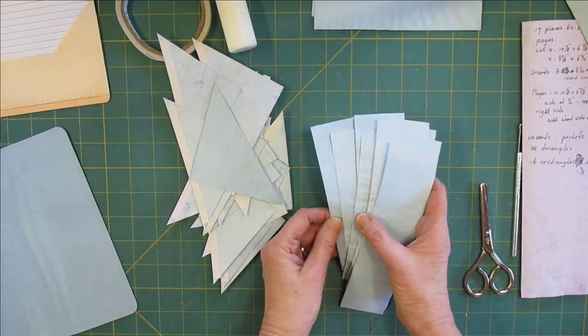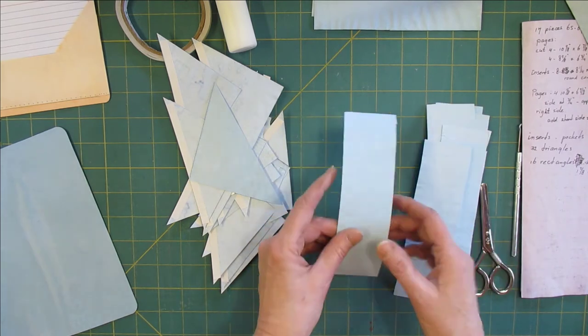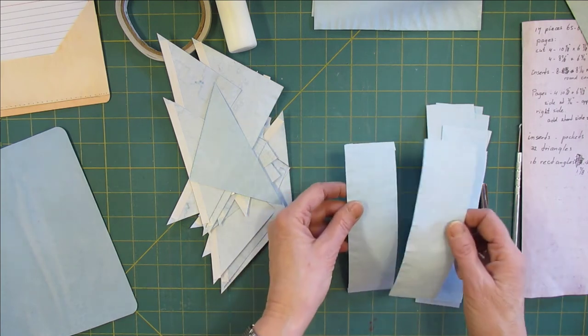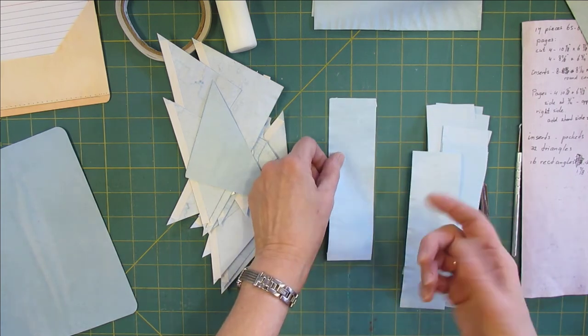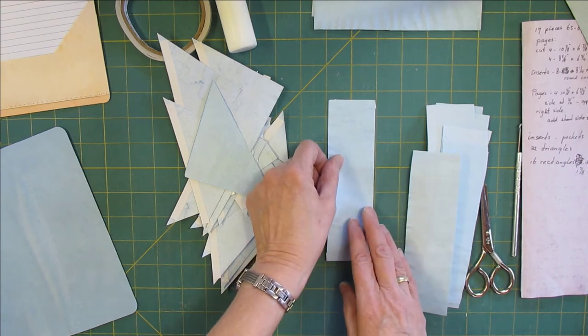We're going to collect the strips that we've taken off our papers and we're going to cut them to 1 7/8 by 6 1/2. Mine are 1 7/8 because I cut off on both ends because I have warped paper.